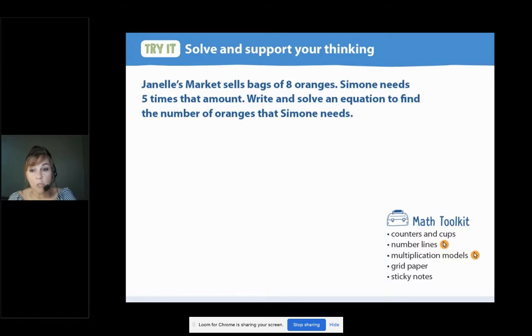Now you're going to have some time to work the problem on your own in your work text. Think about how this is similar to the ones you did yesterday. What do we know and what is unknown? What math symbol will you use? Can you use a model like we worked with yesterday and apply it here? I want you to notice that math toolkit. Counters and cups, number lines, multiplication models, grid paper, sticky notes. You could choose any of those tools listed there. That'll be helpful to you. And if you can think of a second way to solve it, solve it that way too. That'd be awesome. Please pause the video and solve the problem on your own. And when you're finished, press play.